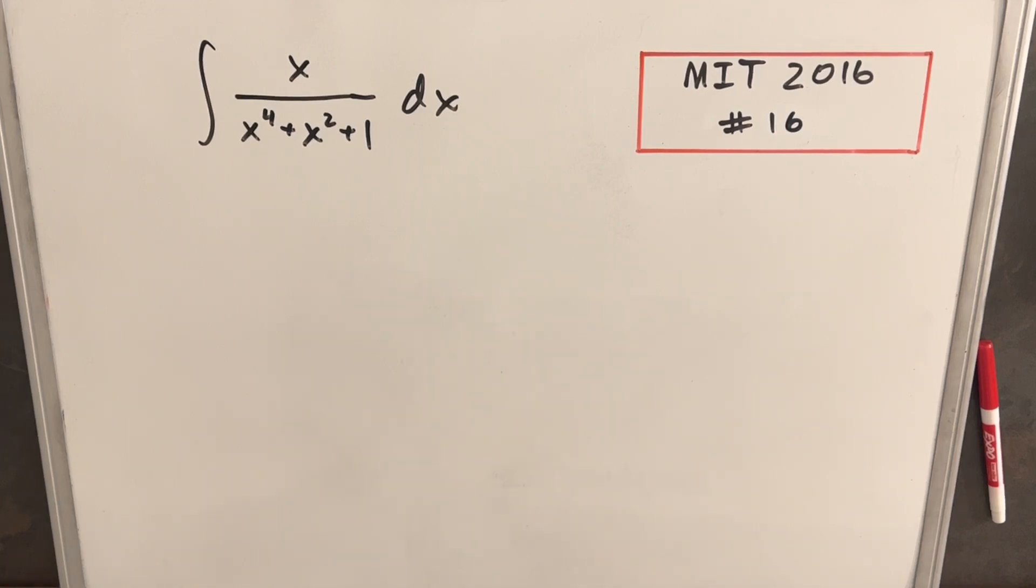Hey, we have here another problem from MIT Integration Bee 2016. This was problem 16. We have the integral of x over x to the 4th plus x squared plus 1 dx.